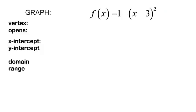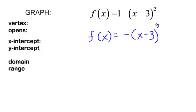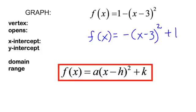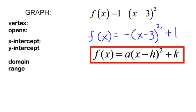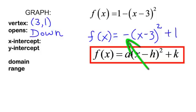Now I want to graph f of x is equal to 1 minus x minus 3 squared. I do know that this is a parabola because of the x squared — it is quadratic. I'm going to rewrite this as f of x equals negative x minus 3 squared plus 1, so it looks more like our formula for a parabola. My vertex is 3, 1.